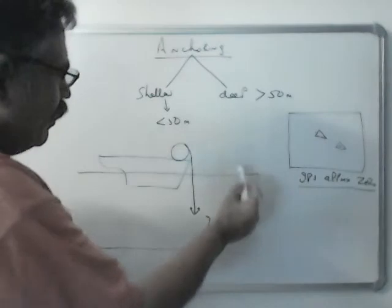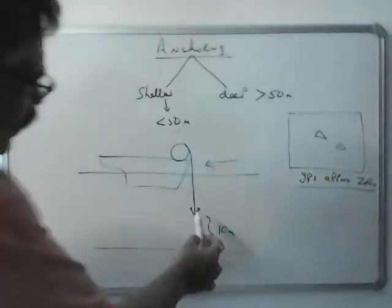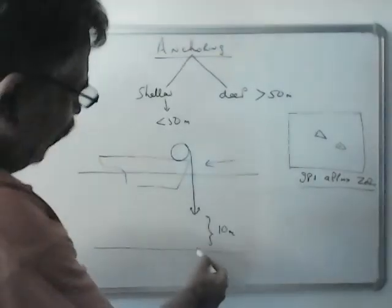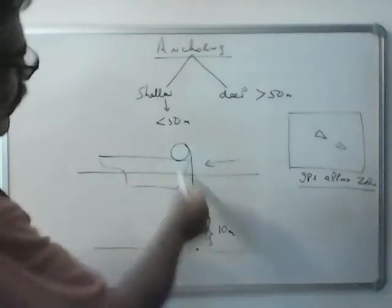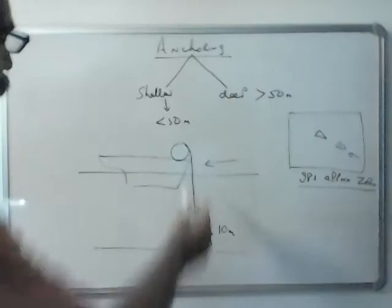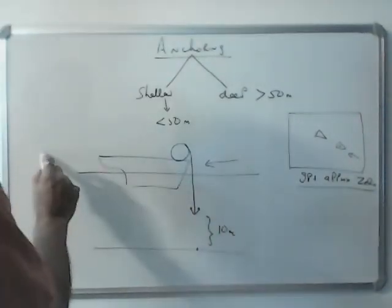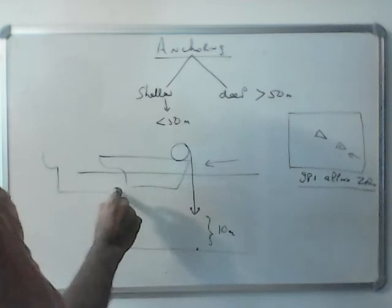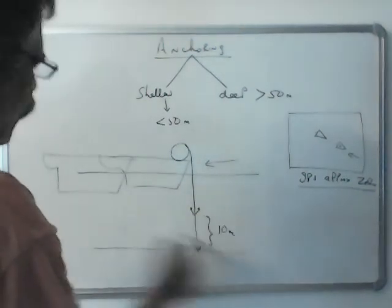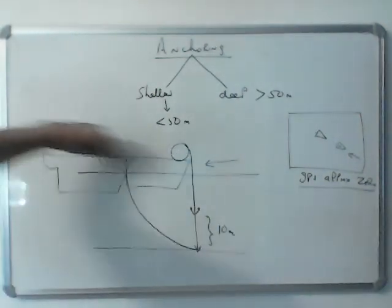And if you are facing the current, ship starts dropping back. If you are not facing the current, so here you can drop it at 2-3 shackles or maximum 3-4 shackles and then hold on. If the ship is not facing the current, finally it will swing and it will face the current. And then the ship starts dropping back.